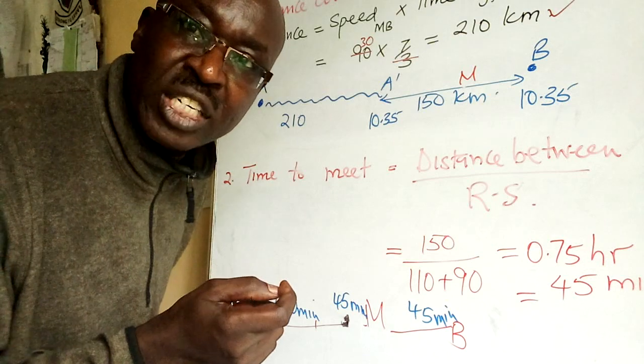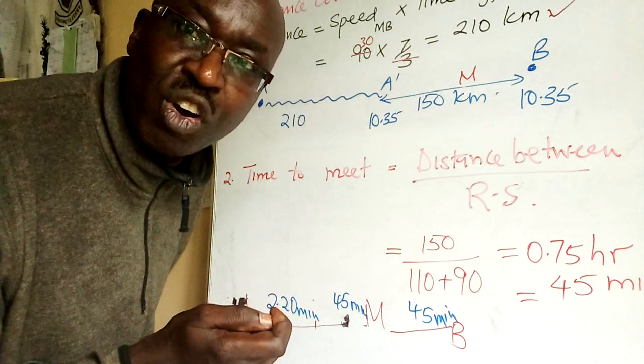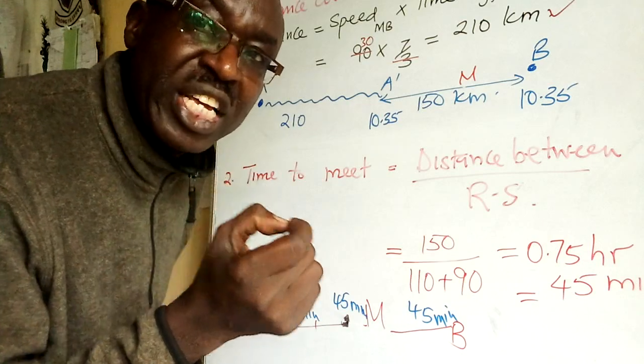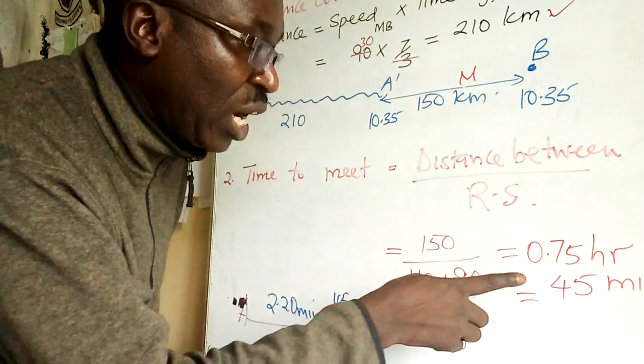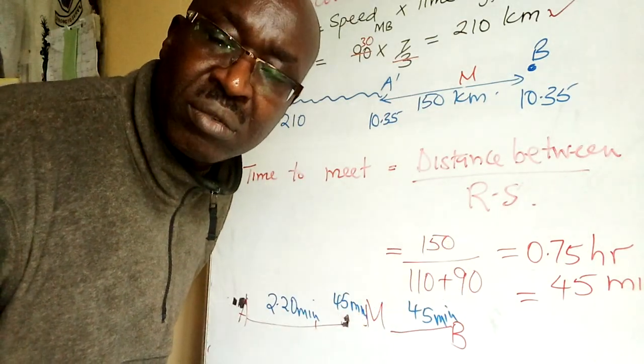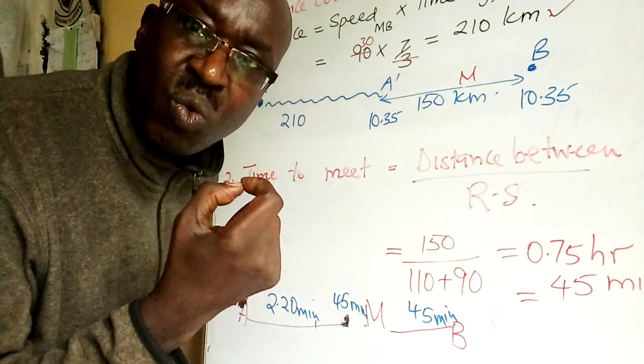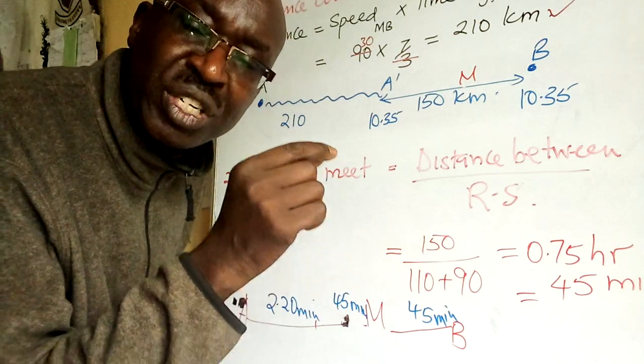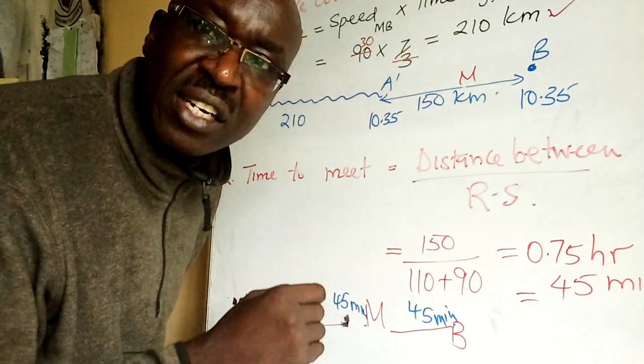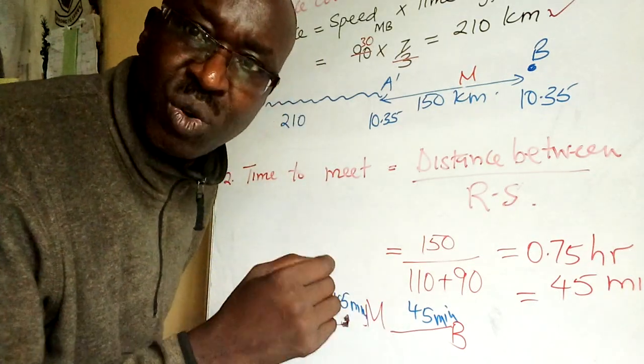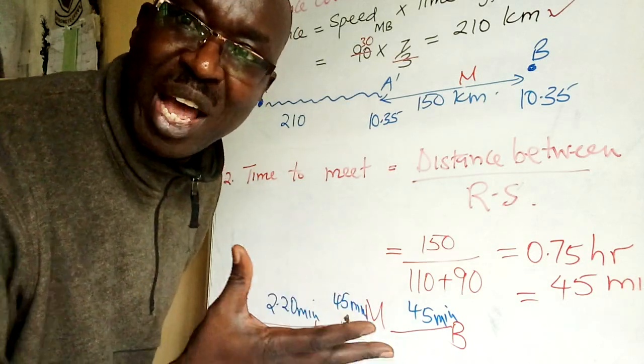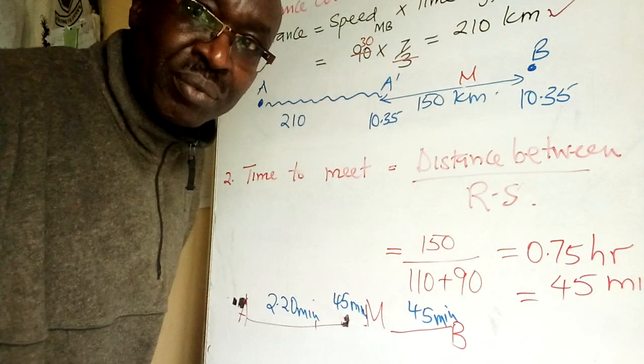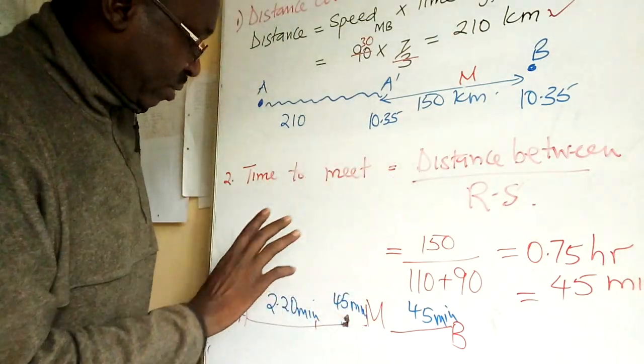So you can get such a question. Another question which you can get is: at what time did they meet or overtake? At what time is time of the day. So you can't tell me 45 minutes - no. At what time did they meet? At refers you to time of the day: at 12 noon, at 12:30, at 2 PM.